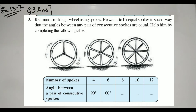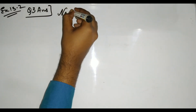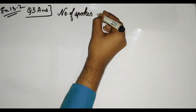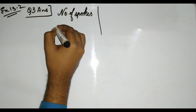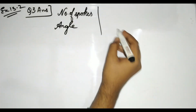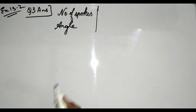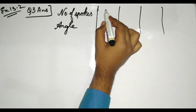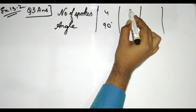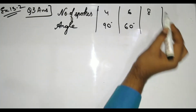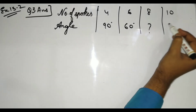Question 3: Rahman is making a wheel using spokes. He wants to fix equal spokes so that the angles between any pair of consecutive spokes are equal. We need to complete a table of number of spokes and the angle between consecutive spokes. The given values are: 4 spokes → 90°, 6 spokes → 60°, and 8, 10, 12 spokes are unknown.